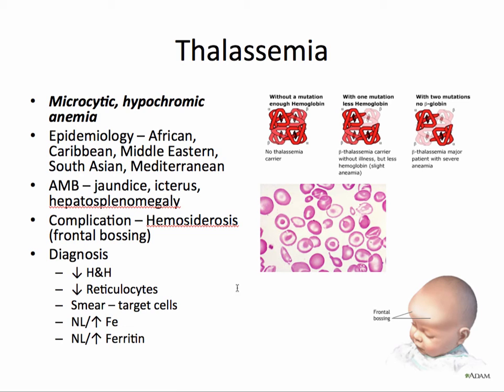This relates back to the protein conformational structure. This particular conformational change produces weak cells that are sequestered by the spleen and destroyed, resulting in jaundice, icterus, and hepatosplenomegaly.